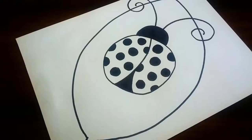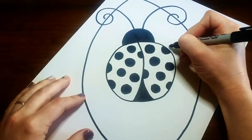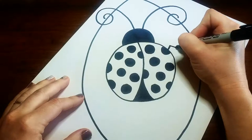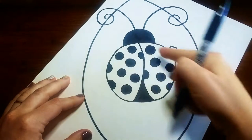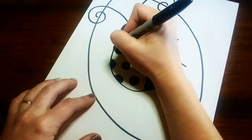Alright so once you're done adding in all your spots we're gonna add in some legs. So we're basically doing a wide upside down V. So I'm gonna go two that go towards the front and then one on the back. I'm gonna do the same thing over here.